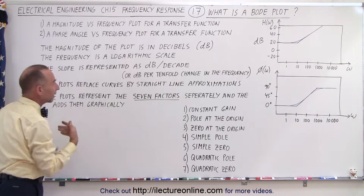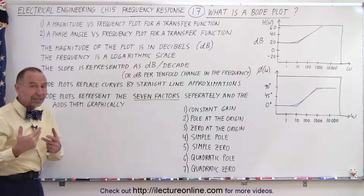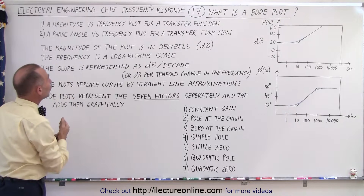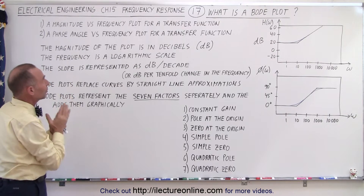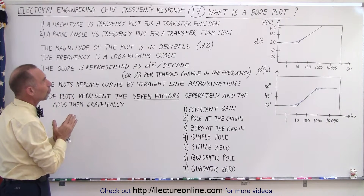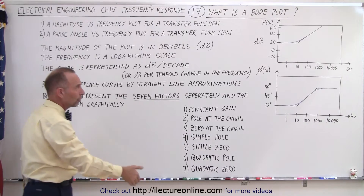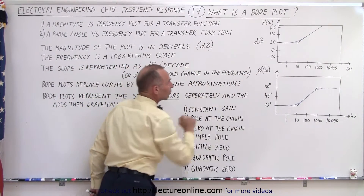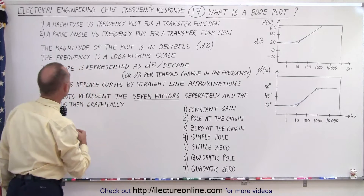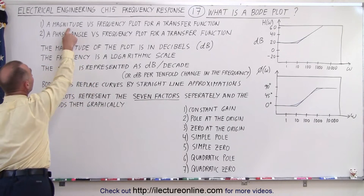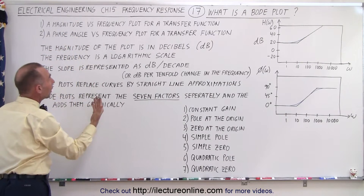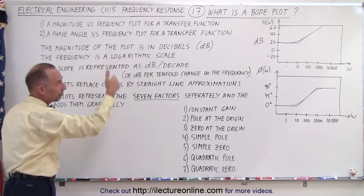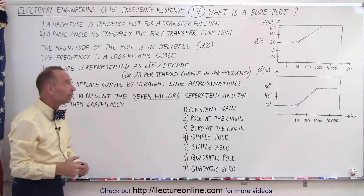Now let's look at some characteristics of the Bode plot. For one thing, it's a magnitude versus frequency plot for the transfer function. The vertical axis gives us the magnitude, the horizontal axis gives us the frequency. We can also draw a Bode plot for the phase angle versus frequency, where the vertical axis is simply the phase angle.